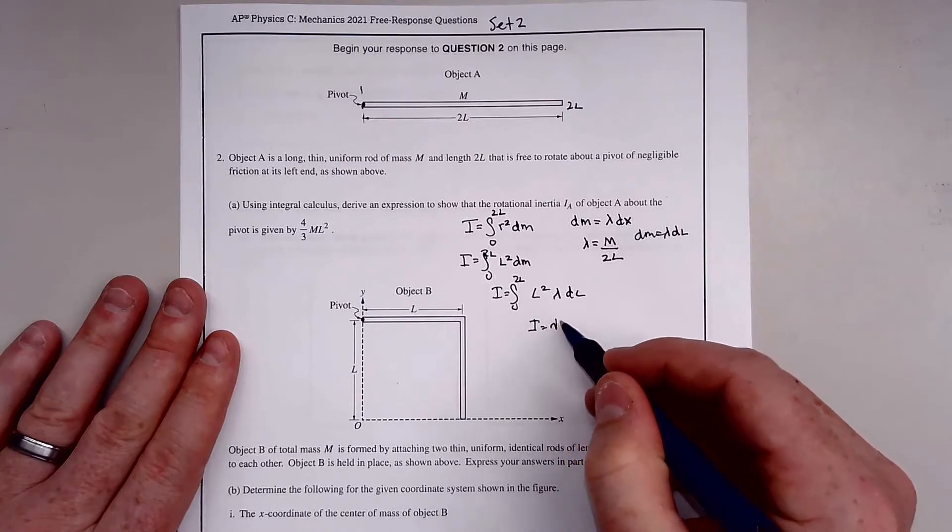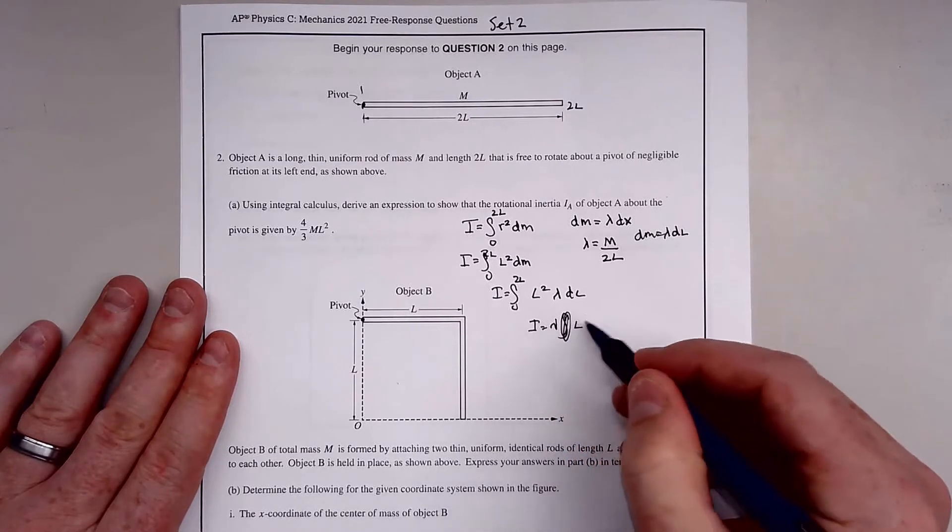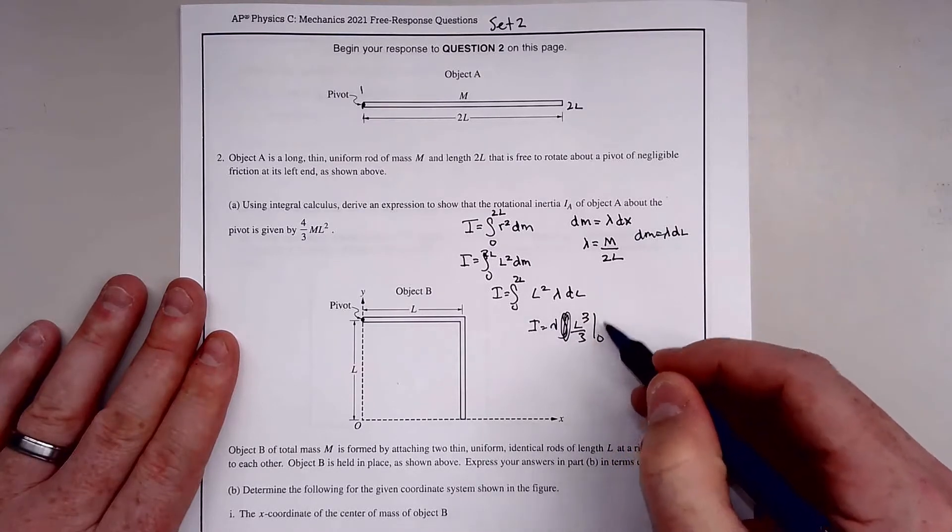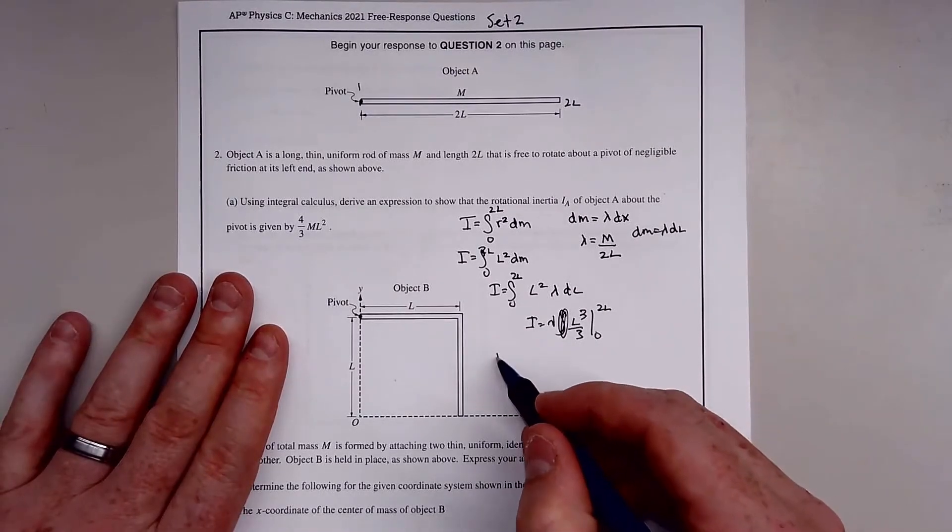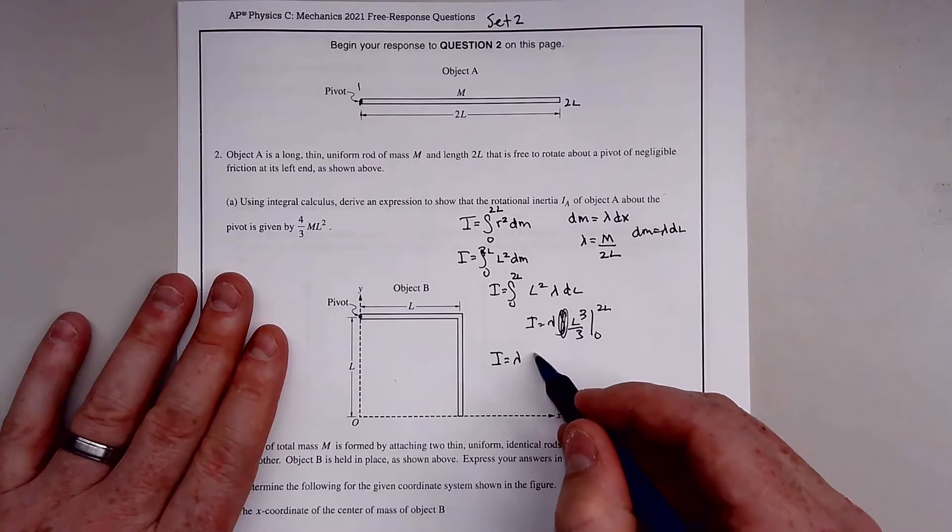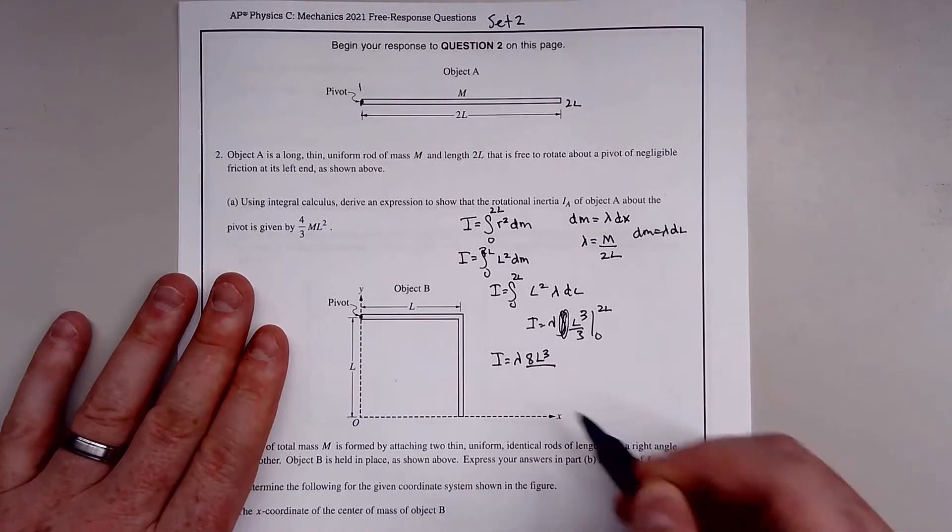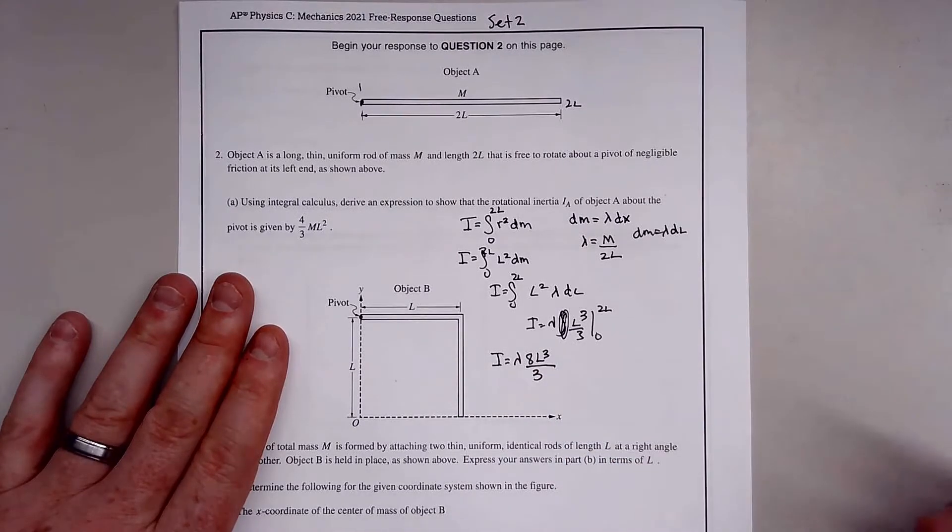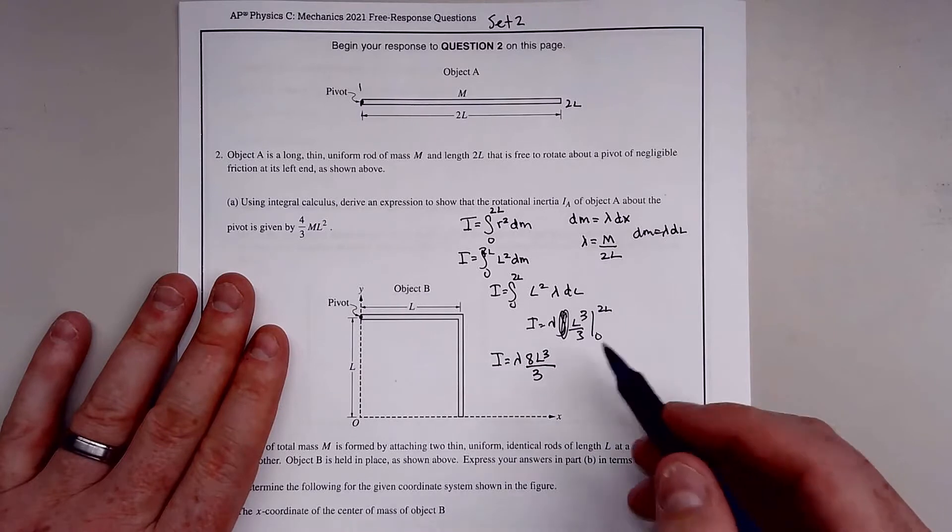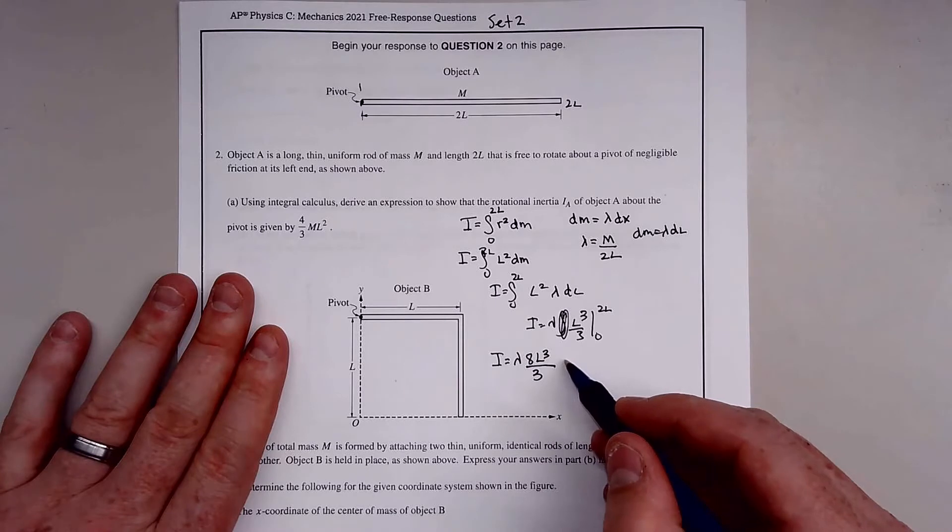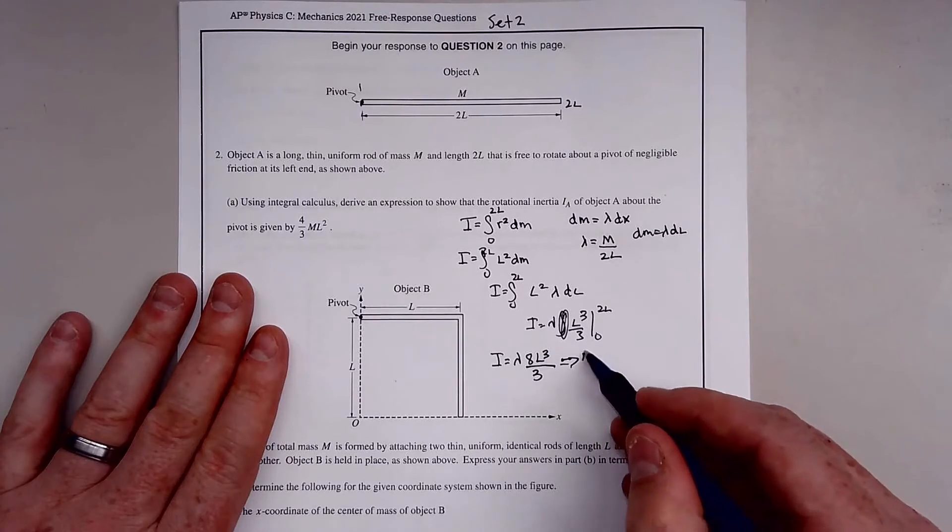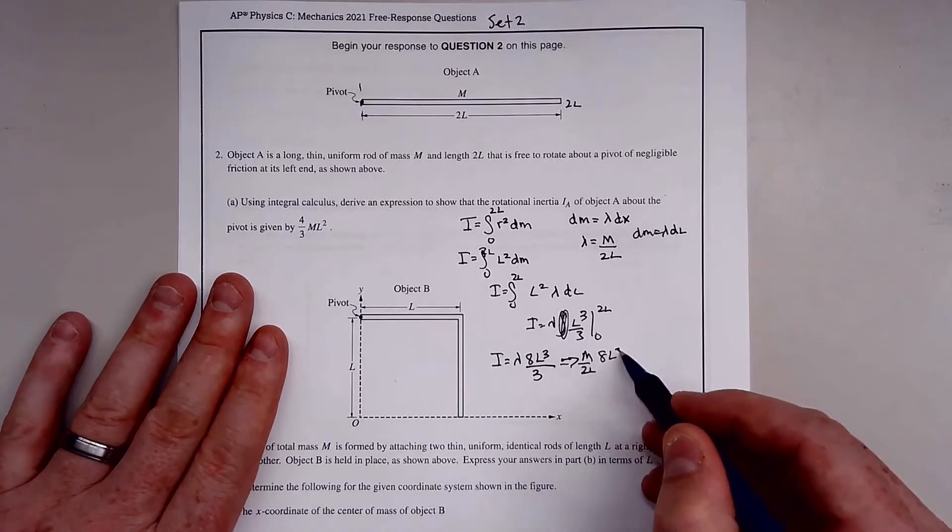So we have lambda times L³ over 3 evaluated from zero to 2L. Plugging in 2L gives us 8L³ over 3. Zero obviously goes to zero. Now we plug in our lambda, which is M over 2L. That gives us M over 2L times 8L³ over 3.